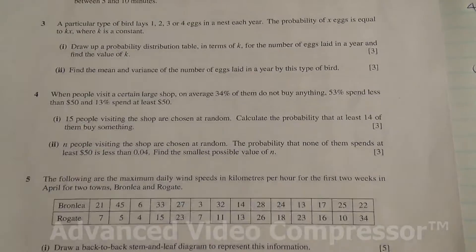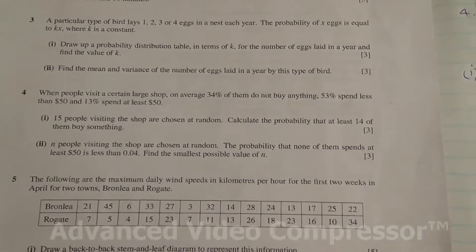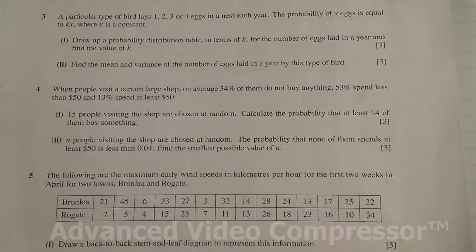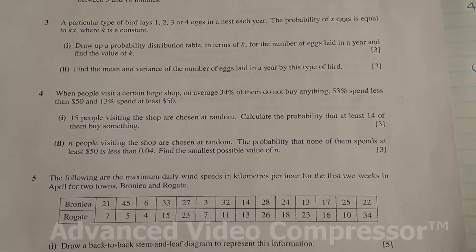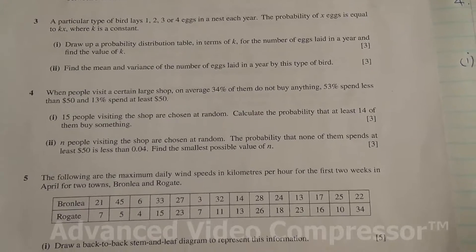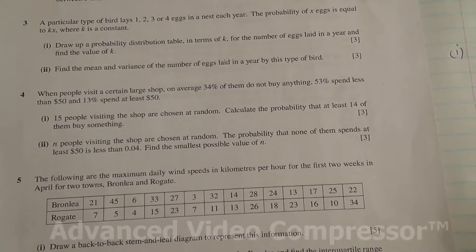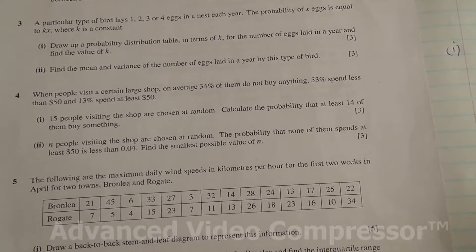Hi, question number 4, taken from June 2016, Advanced Level Maths HSC S1. When people visit a certain large shop, on average 34% of them do not buy anything, 53% spend less than $50, and 13% spend at least $50.